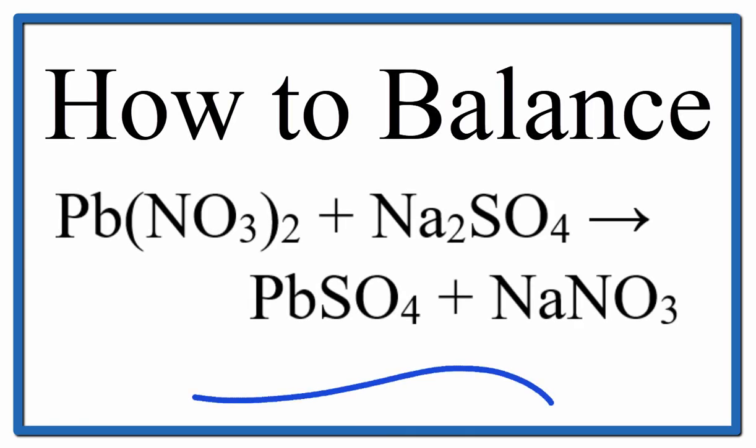To balance this equation, lead nitrate plus sodium sulfate yields lead sulfate plus sodium nitrate, we'll first add up the atoms on each side of the equation.